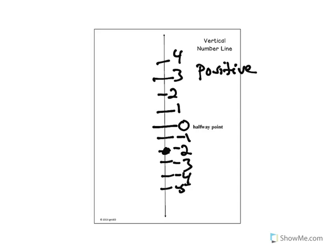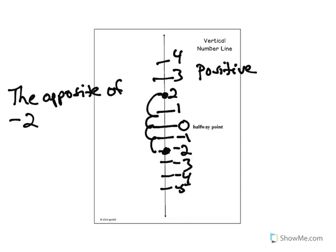Negative 2 goes down two spaces to get to zero, so we have to go two spaces the opposite direction to get to the opposite, which would be a positive 2, also written as positive 2. So that's pretty much the lesson today.